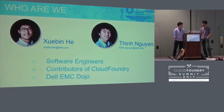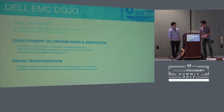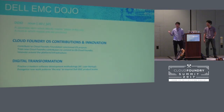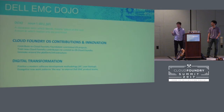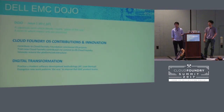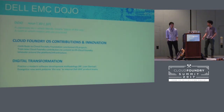So what is DLMC Dojo? Dojo in Japanese literally means the place of the way, where students come and practice martial arts. We have two main focuses. The first is we contribute to Cloud Factory projects and also innovate on those projects, like coming up with new ideas and doing research. The second purpose is digital transformation, where we evangelize pair programming and test-driven development among internal teams at DLMC. In short: Cloud Foundry and digital transformation.